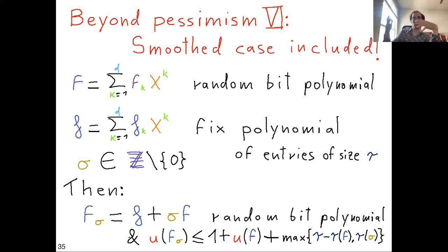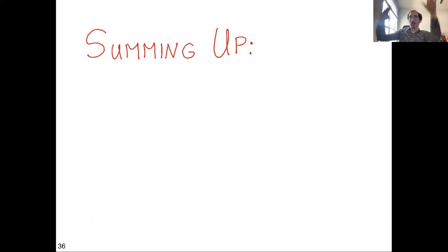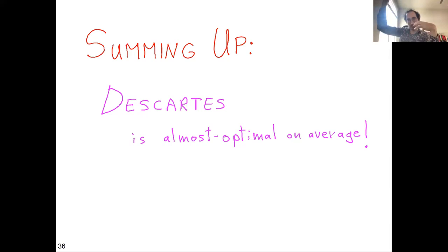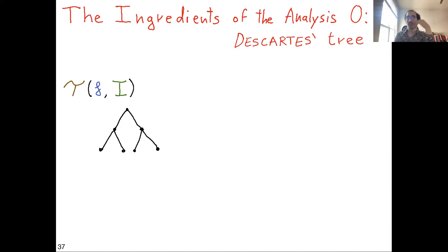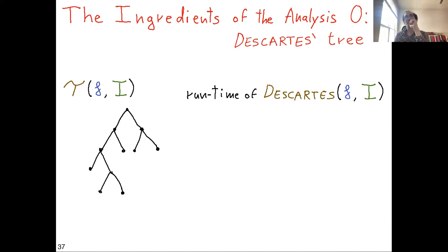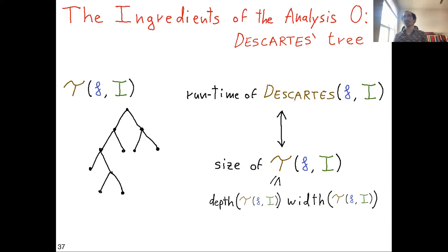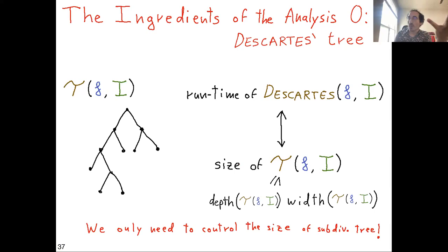Let me sketch how we prove this. The key ingredient is the Descartes tree: starting from an interval, we split it, some branches terminate when the sign variation count reaches zero or one, and the process continues. The runtime of the Descartes algorithm is roughly proportional to the size of this tree. To control the tree size, we control its depth and its width separately.